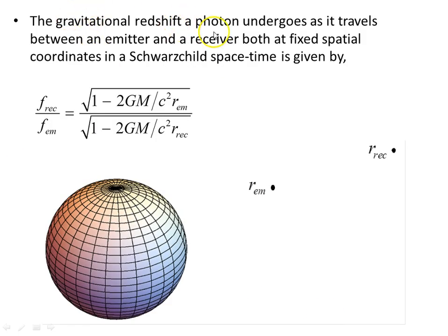Now, the gravitational redshift a photon undergoes as it travels between an emitter and a receiver, both at fixed spatial coordinates in a Schwarzschild spacetime, this was the subject of a previous video. We found that the frequency at the receiver, an observer at the receiver detects this frequency. At the emitter, a separate observer at rest with respect to the emitter detects this particular frequency. On the Schwarzschild spacetime, at the emitter and the receiver, here are the relative frequencies.